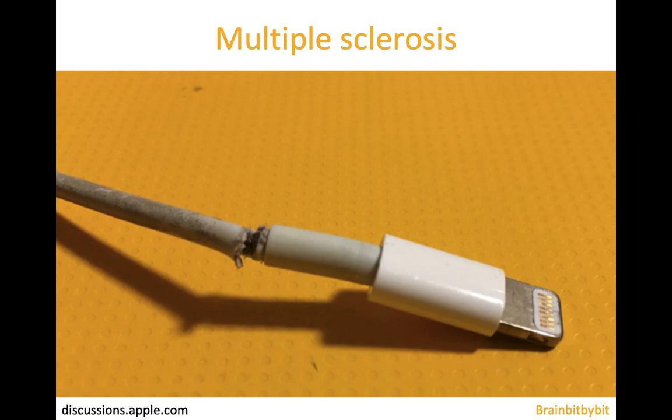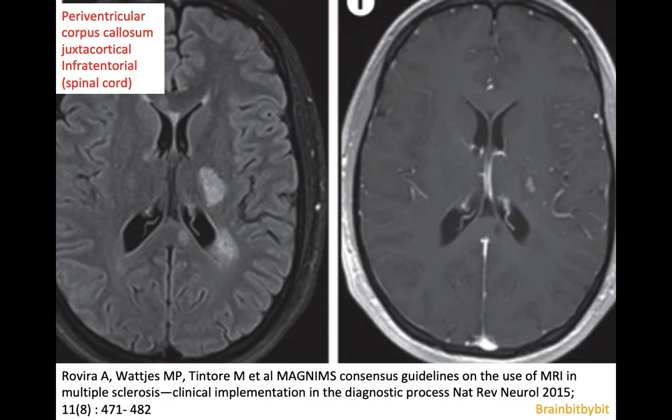Bit by bit I'm going to show images of multiple sclerosis. When you see an MRI of the brain with white matter lesions, it is important to distinguish lesions at locations typical for multiple sclerosis from aspecific white matter lesions.